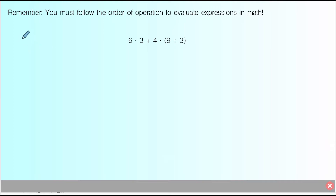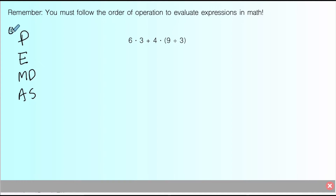Order of operations — as I'm sure all of you are well aware. We use P for parentheses, E for exponents, multiplication and division are next, and addition and subtraction are last. Parentheses come first no matter what, then we look for any exponents — that's second. Multiplication and division: it doesn't matter which one comes first; you just work left to right. Same with addition and subtraction — you work from left to right, doing whatever comes first.